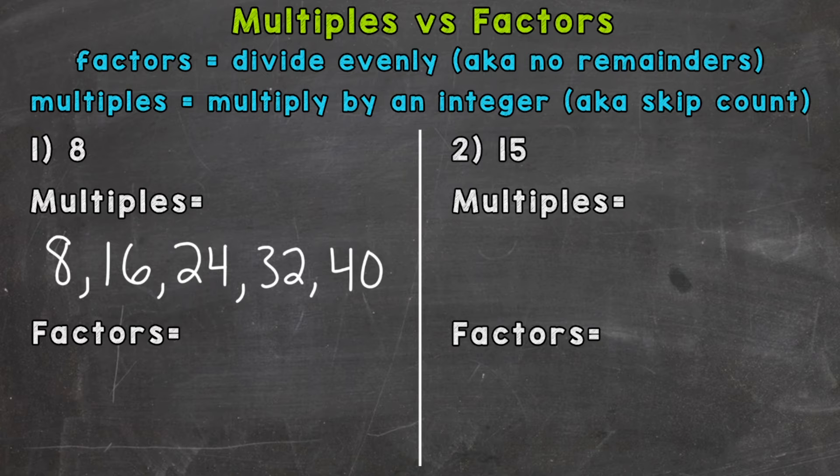And when we find factors, I like to start with two numbers for two factors for every number. And those factors are one and then the number itself. So one and eight. I can do eight divided by one and that will divide evenly. I will not get a remainder and I can do eight divided by eight.